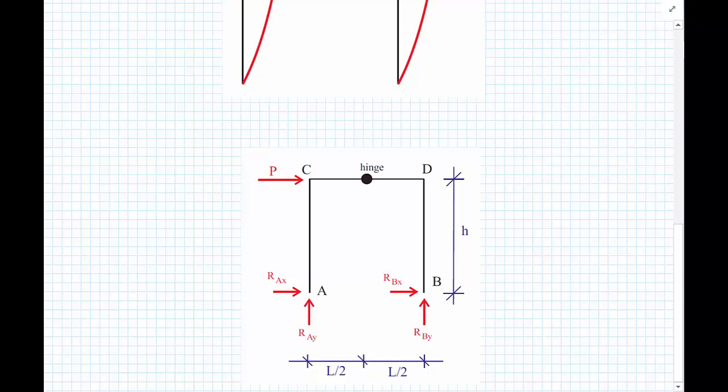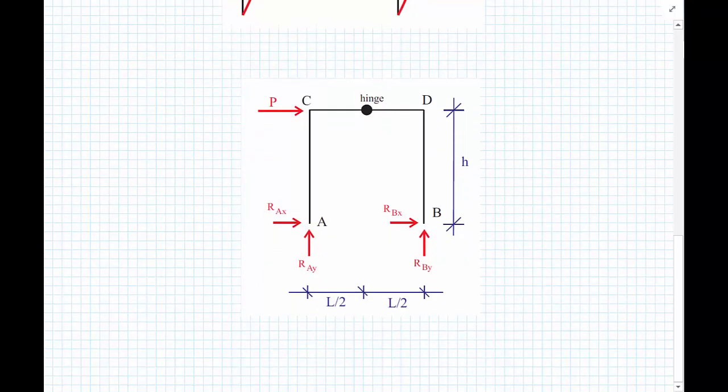A length L upon 2. So we're left with this free body diagram of the structure with the four support conditions at A and B, the load P, and a hinge halfway between C and D. Now we're left with one final problem.